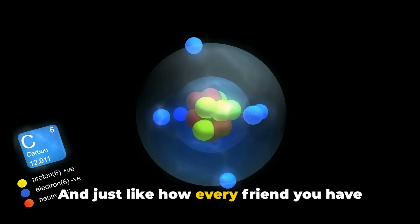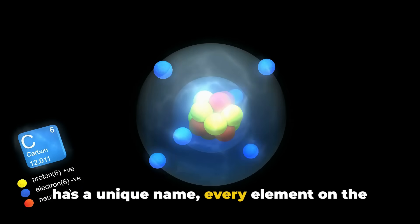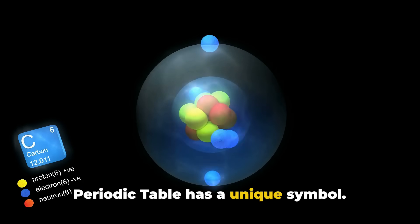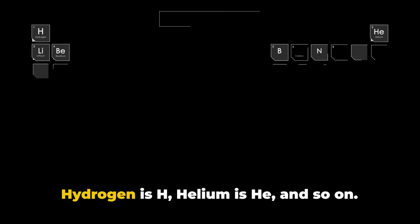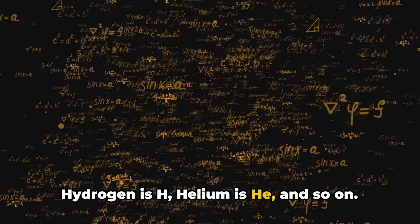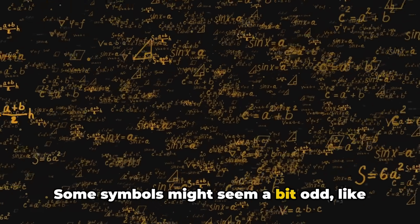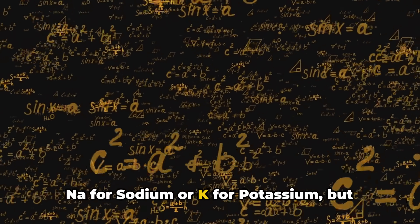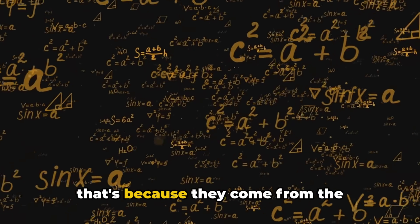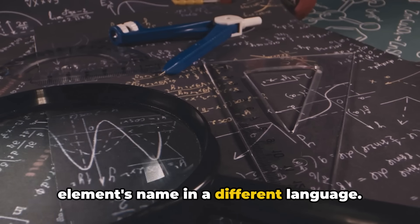And just like how every friend you have has a unique name, every element on the periodic table has a unique symbol. Hydrogen is H, helium is He, and so on. Some symbols might seem a bit odd, like Na for sodium or K for potassium, but that's because they come from the element's name in a different language.